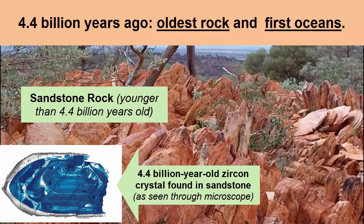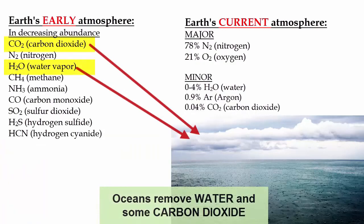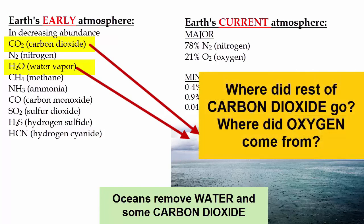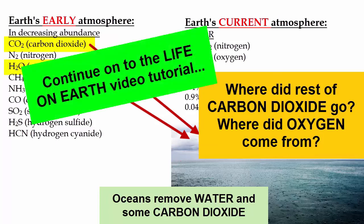The ratio of isotopes we see in the uranium atoms in the crystal are ratios known only to occur in the presence of liquid water. The formation of oceans explains where the water and most of the carbon dioxide went in early Earth's atmosphere. But where did the rest of the carbon dioxide go, and what formed the oxygen? The rest of this mystery is resolved when we review the impact of life on our planet. To learn more, continue to the video tutorial, Life on Earth.